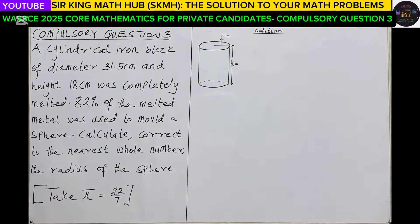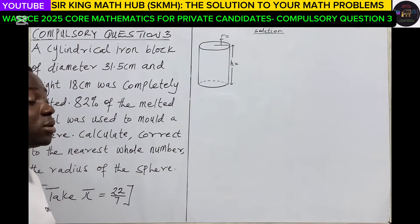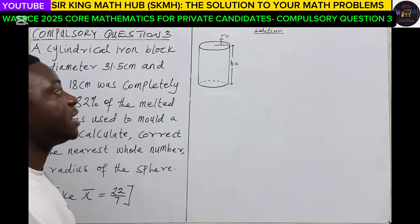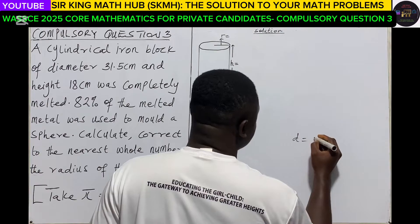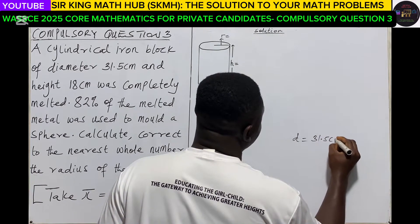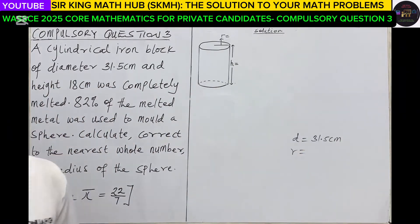So first of all, let's identify the dimensions of this iron block. Remember that this iron block is in the shape of a cylinder. So there is our cylindrical iron block. We're told that the diameter was 31.5 centimeters, but we want the radius. Remember that the radius is half of the diameter.